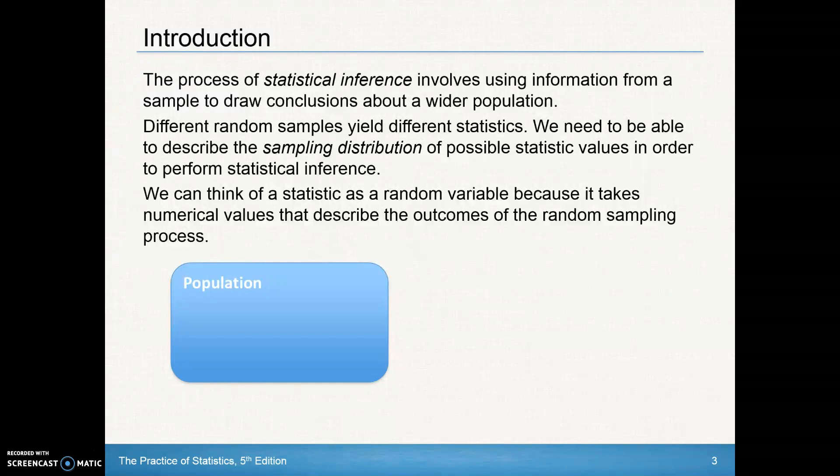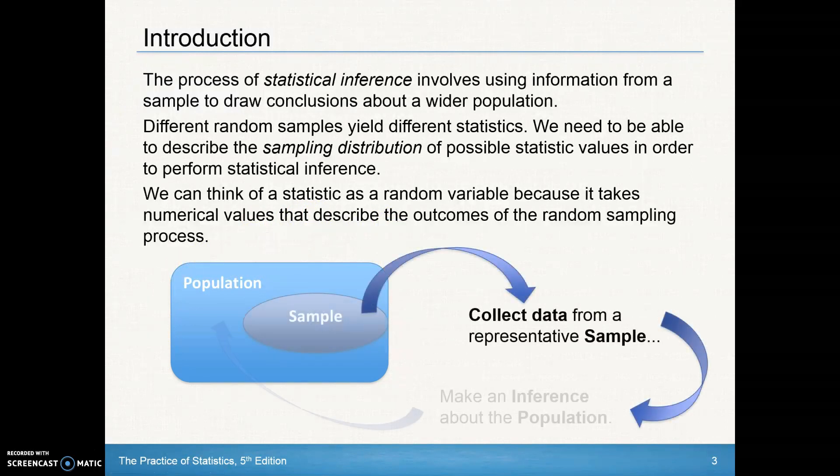So your x-bar can be a random variable. It can take on different values as it does when different people do the same collection of data. They'll come up with a different mean based on how many they've collected and just the random variation. So we're always looking at a population. We've got our population and we're going to take a sample from that and collect data from that in order to make an inference about the population.